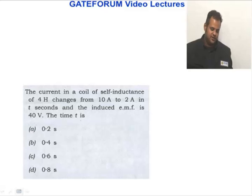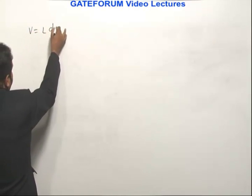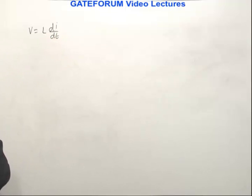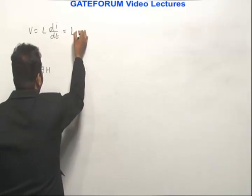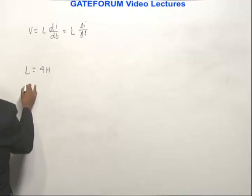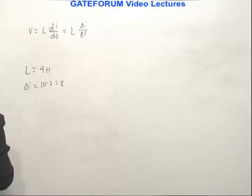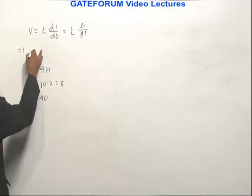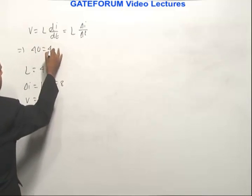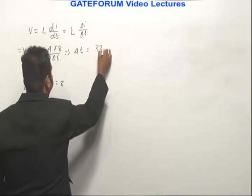The current in a coil of self-inductance 4 Henry changes from 10 ampere to 2 ampere in t seconds, and the induced EMF is 40 volts. Find t. Using V = L × ΔI/Δt: L = 4 H, ΔI = 10 − 2 = 8 A, V = 40 V. So 40 = 4 × (8/Δt), which gives Δt = 32/40.